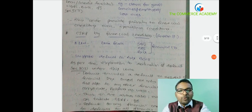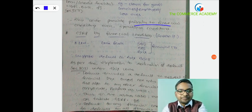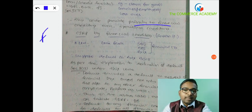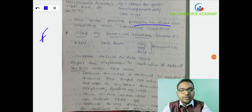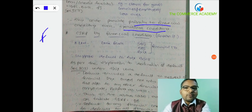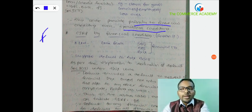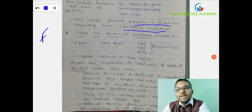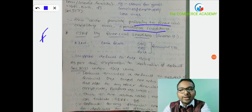This code provides priority to financial creditor over operational creditor. Since banks and financial creditors have larger amounts at stake, priority is given to financial creditors. Financial creditor plays a very vital role in financing the corporate debtor as compared to operational creditor - the amount financed by financial creditors is higher than operational creditors, hence this code provides priority to financial creditors.